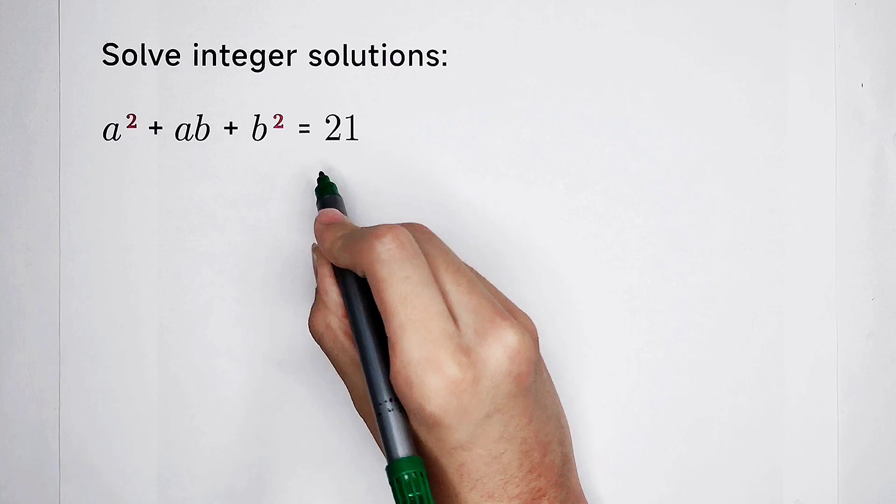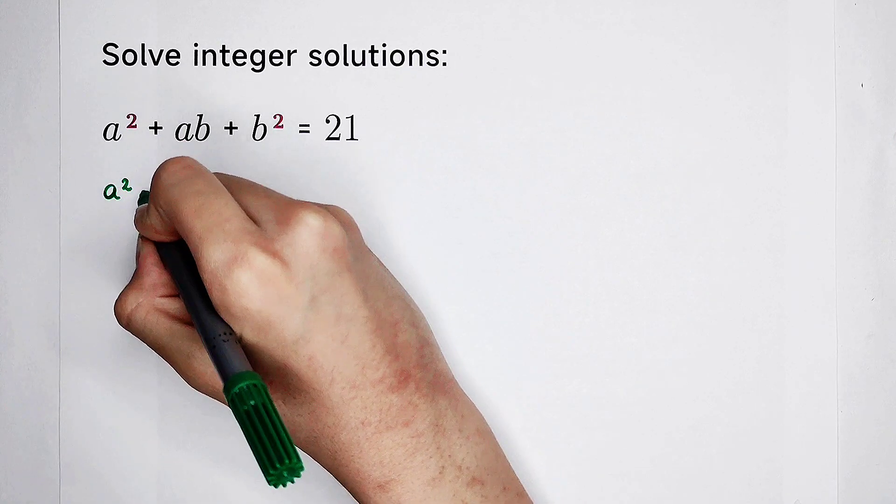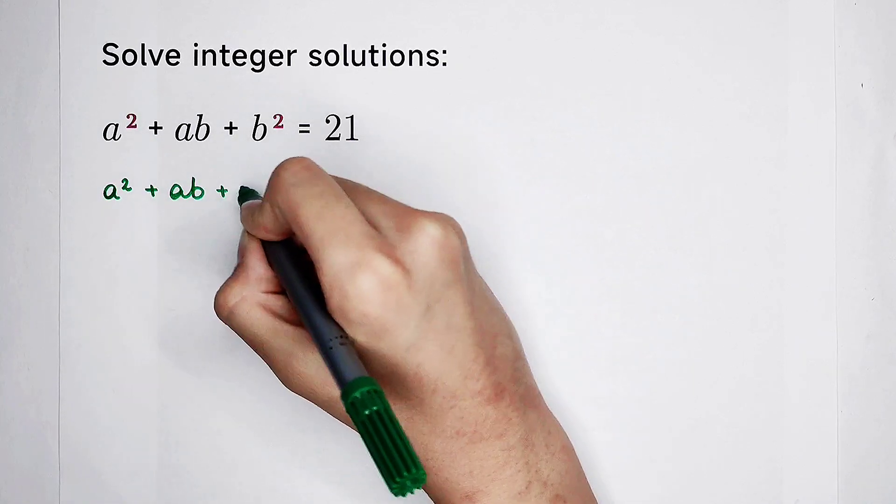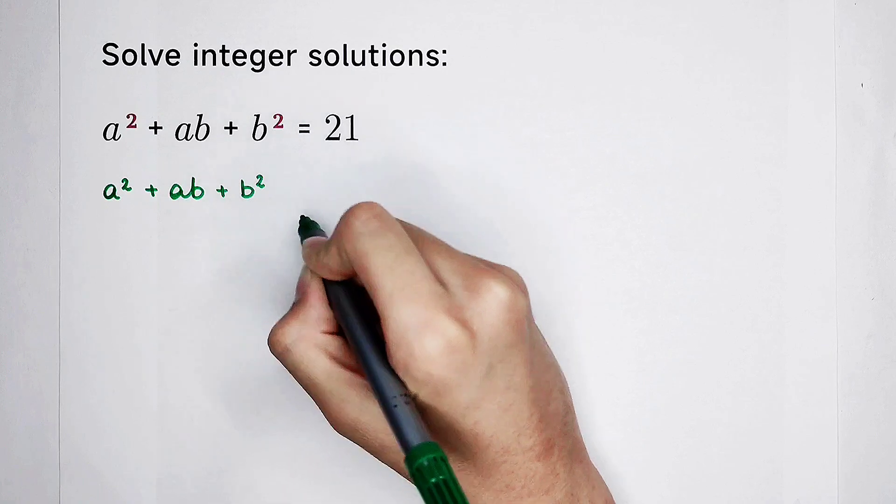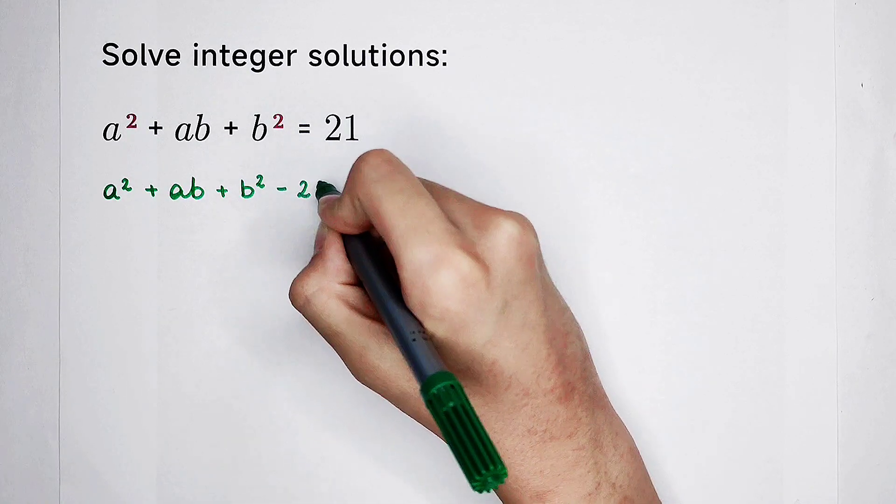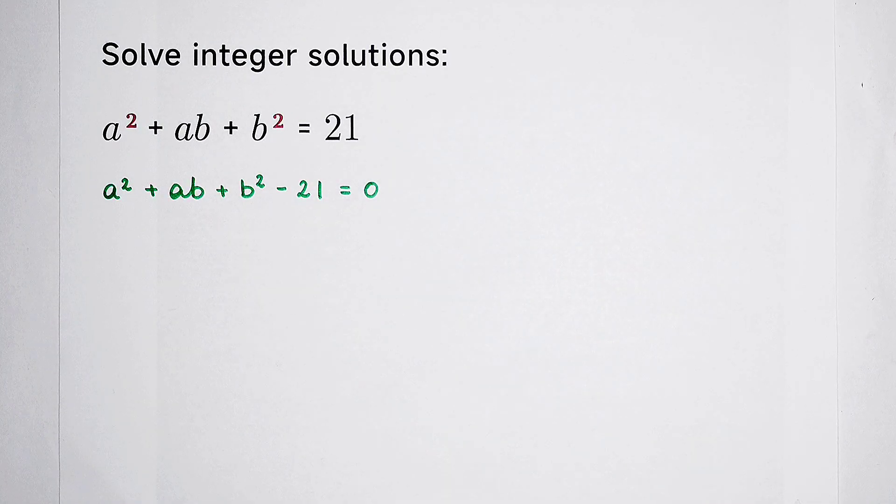Now, first, rearrangements. a squared plus ab plus b squared. Let's subtract 21 from the both-hand sides. So, subtract 21 is equal to 0. Now what should we do?